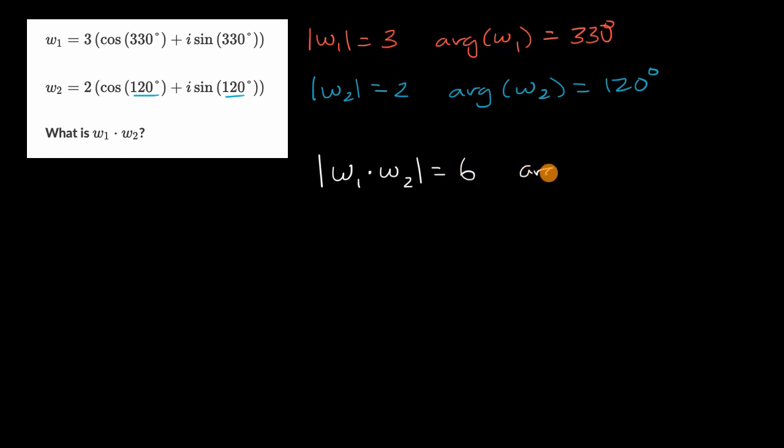And then the argument of W sub one times W sub two. If we start at W sub two's argument, 120 degrees, and then we rotate it by W sub one's argument, well then you're going to add these two angles, that gets you to 450 degrees.